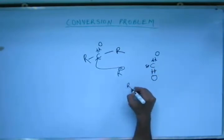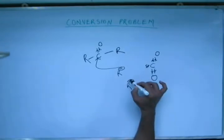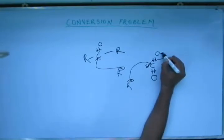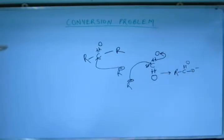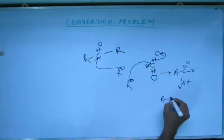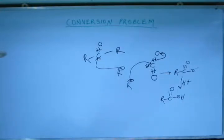If we make Grignard reagent react with carbon dioxide gas — either by adding CO₂ at high pressure or by adding dry ice into the system — the Grignard reagent will attack the carbon of CO₂, the pi bonds will shift onto the oxygen, and we will get a carboxylate ion. This carboxylate ion, on subsequent protonation, gives a carboxylic acid.